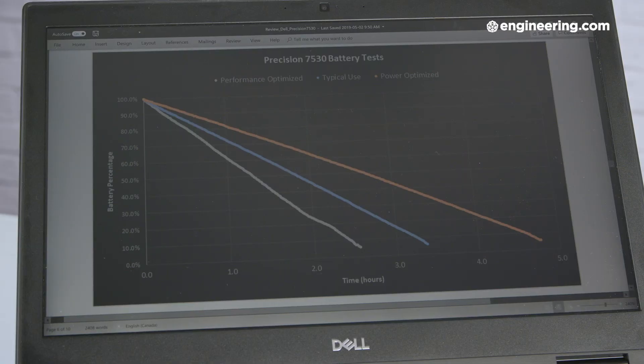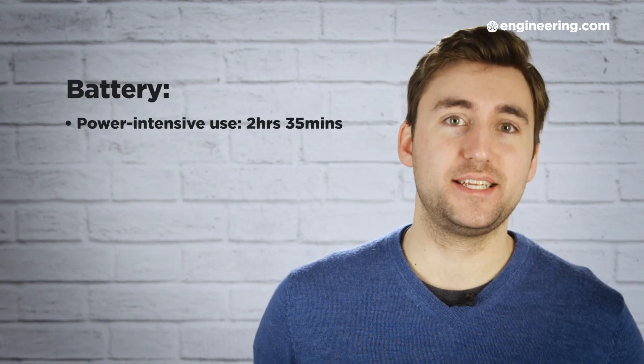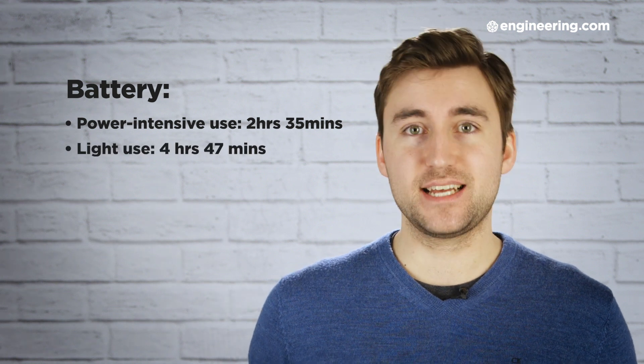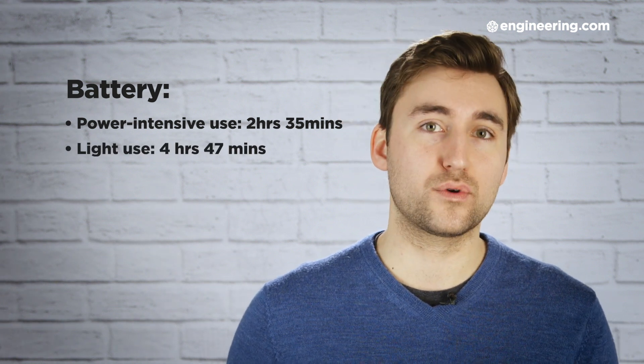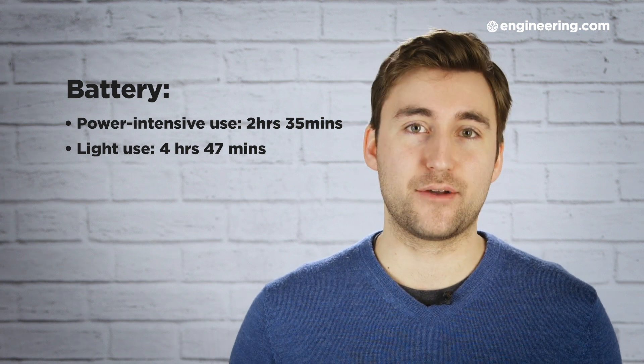Another weak point for the Precision 7530 is its battery life. We always run tests to find the lowest battery life possible and the highest battery life possible, and the 7530 doesn't have a great range. When we ran our power heavy tests, we got 2 hours and 35 minutes of use, and when we ran our light efficient tests, we got only 4 hours and 47 minutes. So even in the best case, it's far from an all day battery life.